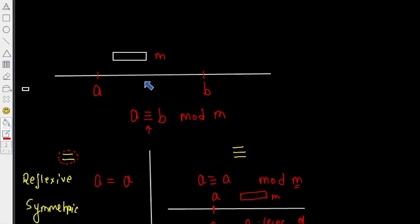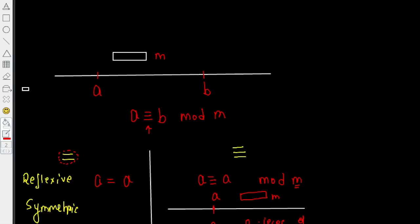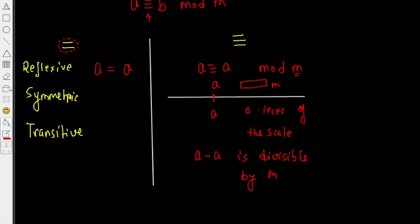If you look into this modular structure, then all it is asking you to find out is whether A minus B is divisible by M or not, because if it is divisible by M, that means you can use finitely many pieces of that M to cover up this region. So definitely the idea of divisibility of the difference and the idea of measurement by the scale of M are the same.